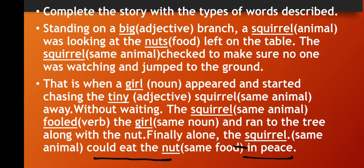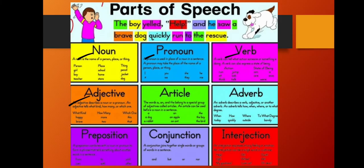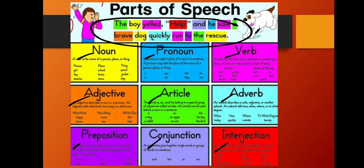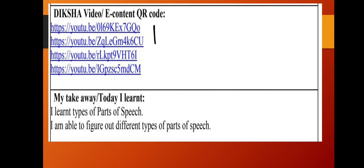For your help, all parts of speech are explained - noun, pronoun, verb, adjective, article, adverb, preposition, conjunction, and interjection. The words from the sentence are given in matching colors. Some Diksha video links are provided here - you can click on these links to see extra material. What is the takeaway? Today we learned different types of parts of speech and how to identify them, how to figure them out. Figure out means to recognize or identify them.